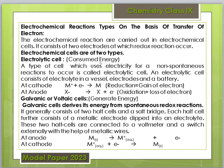The electrolytic cell is non-spontaneous — you supply electricity and then the reaction occurs. The galvanic cell is spontaneous — it produces electricity through chemical reaction. The galvanic cell is divided into two half-cells inside one vessel, which are connected together.